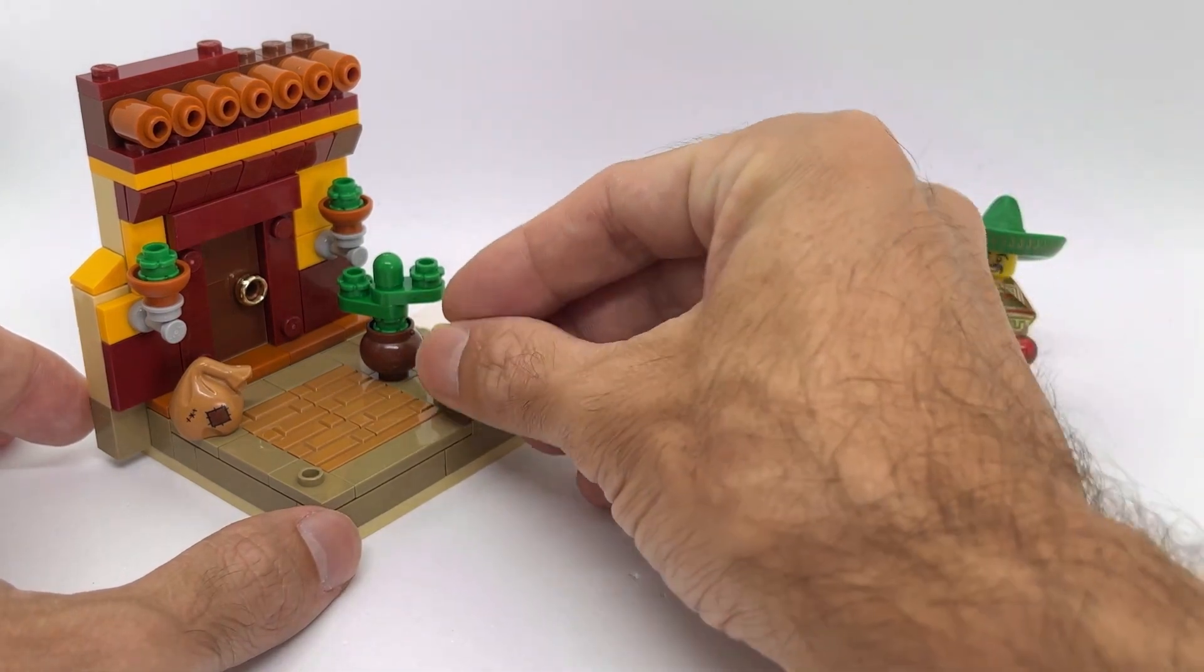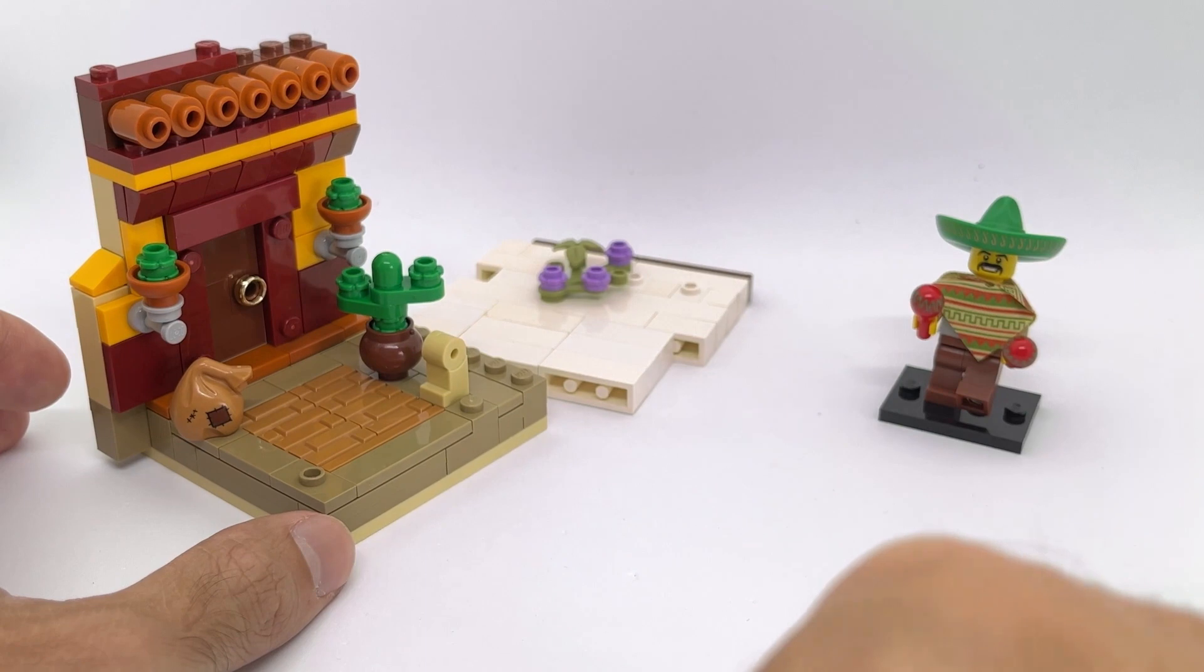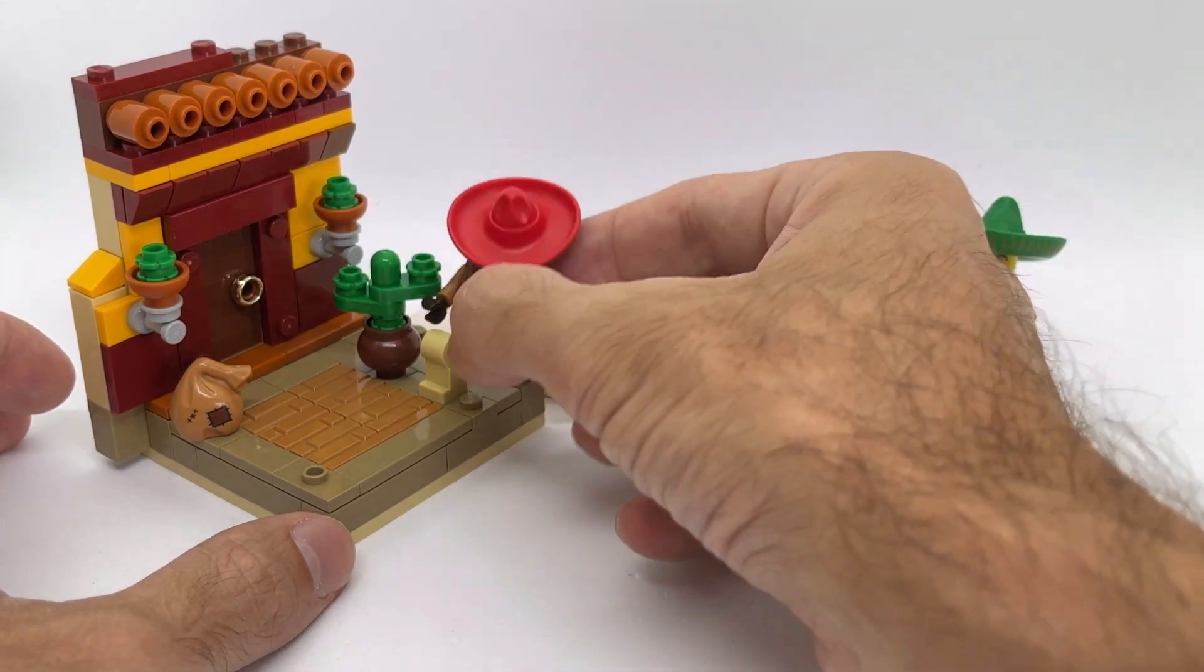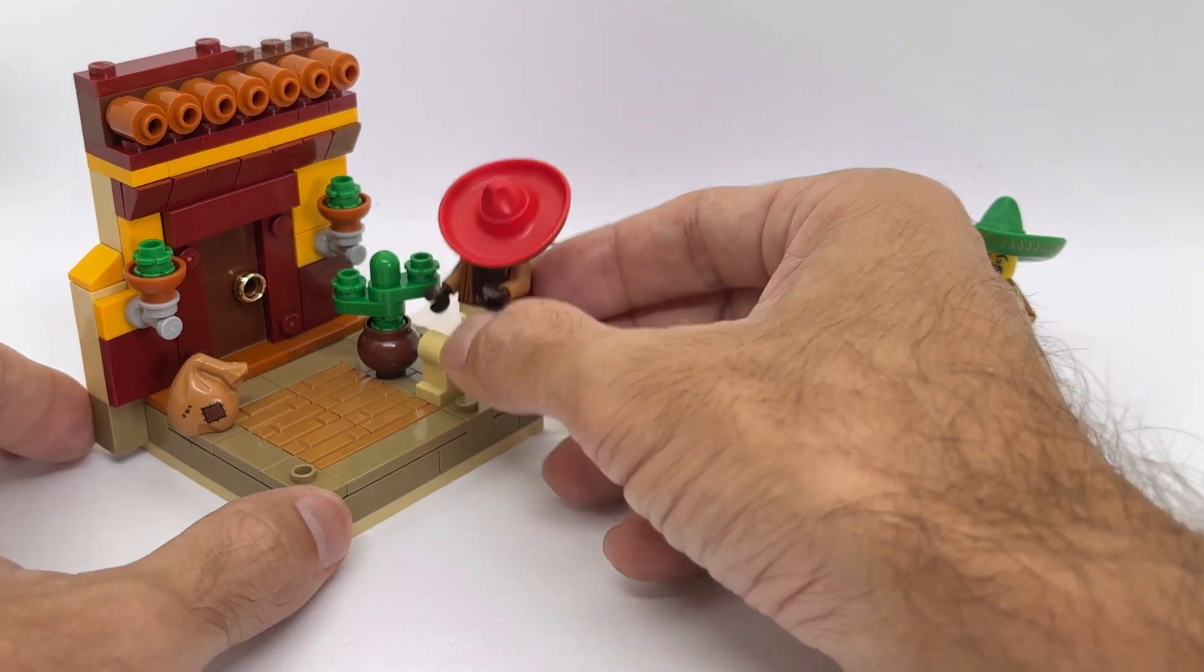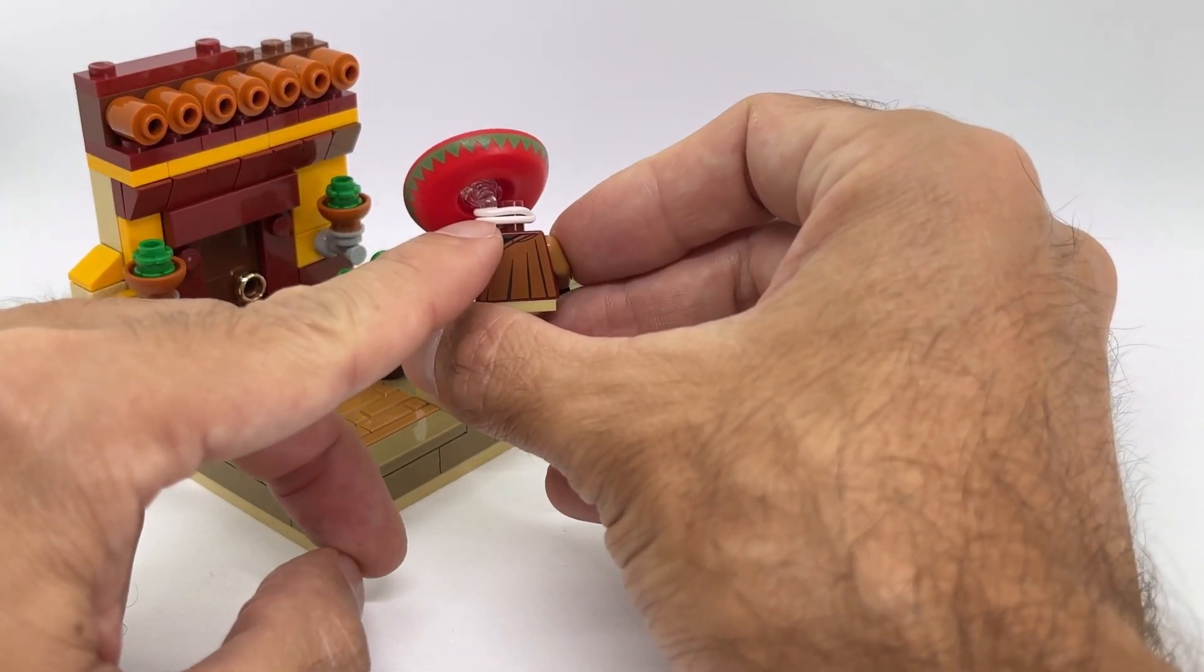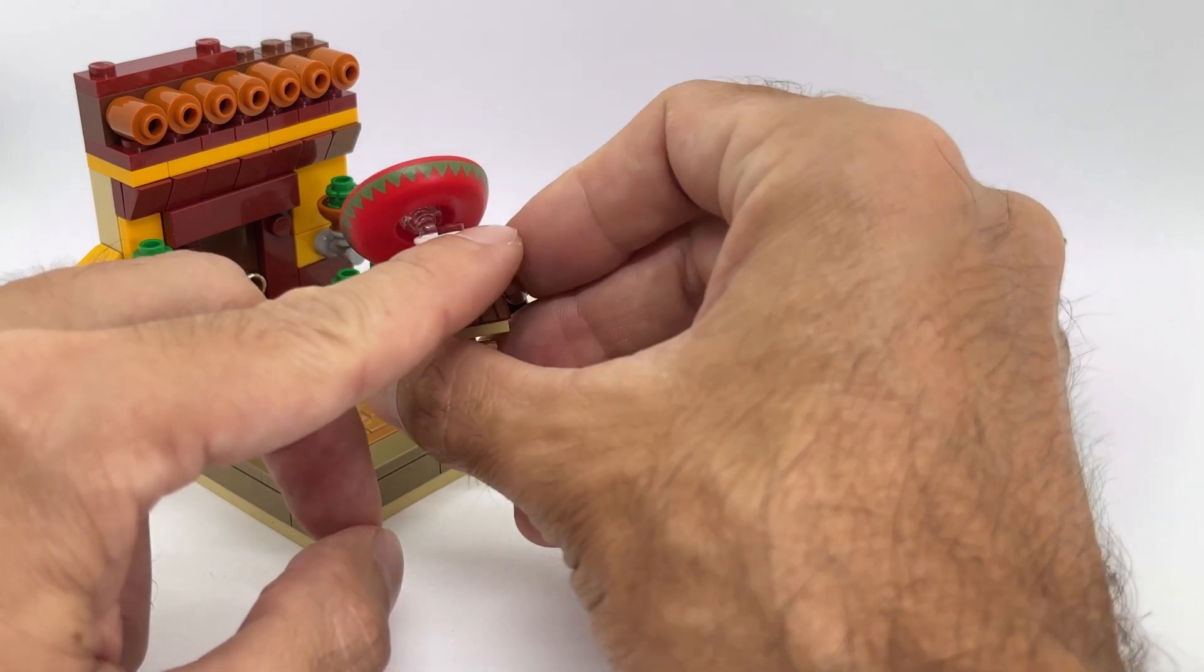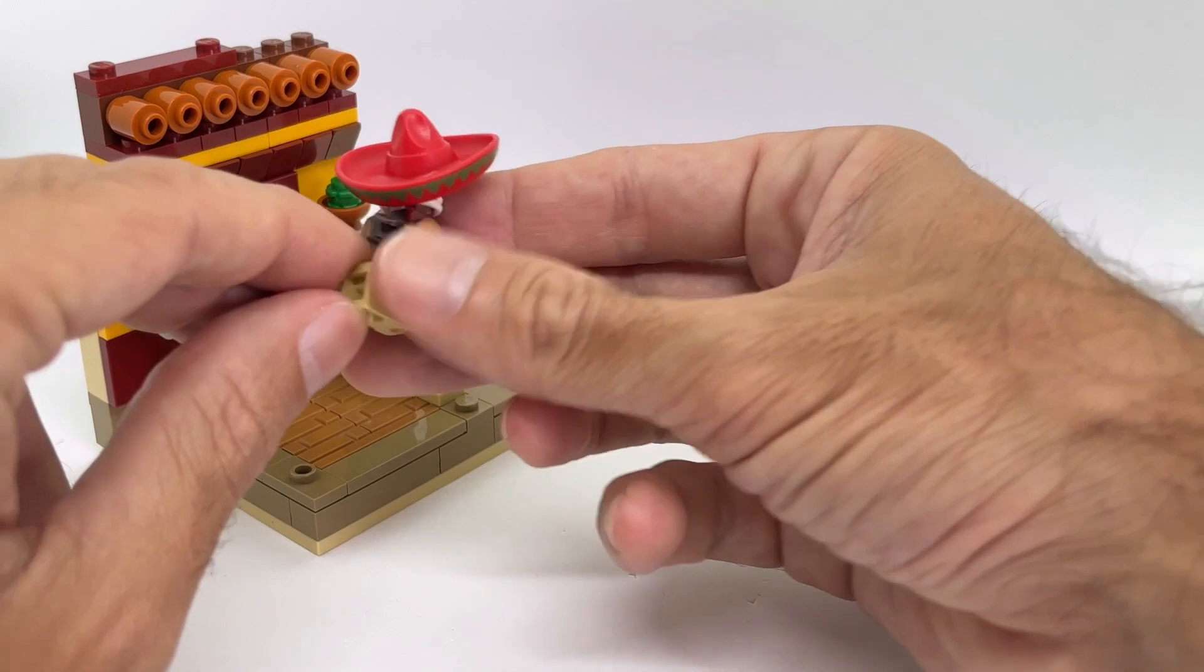So this is gonna be a minifigure that is having a siesta. So we're gonna have him sitting down with his sombrero in front of the head taking a little nap. How do I connect this? Very simple, I use one of those transparent angle studs and then with a LEGO elastic band I wrap it around so it's in the right position.